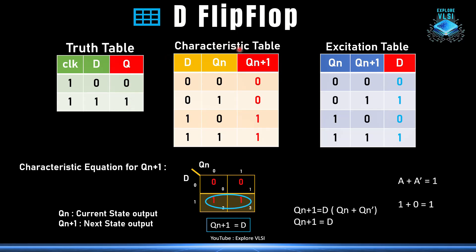Looking at the D flip-flop characteristic table, we need the input and the current state of output to predict the next state. When input D is 0 and current state Q(n) is 0, the next state Q(n+1) is 0. When D is 0 and Q(n) is 1, next state is 0. When D is 1 and Q(n) is 0, next state is 1. When D is 1 and Q(n) is 1, next state is 1. By looking at the input and current state, we can determine the next state — that is the characteristic table.